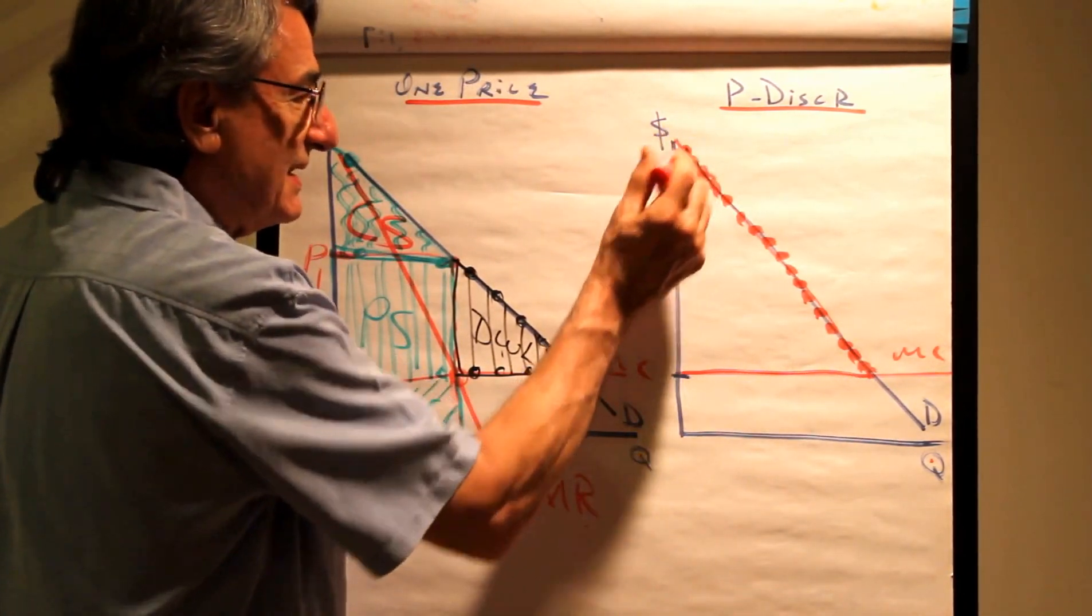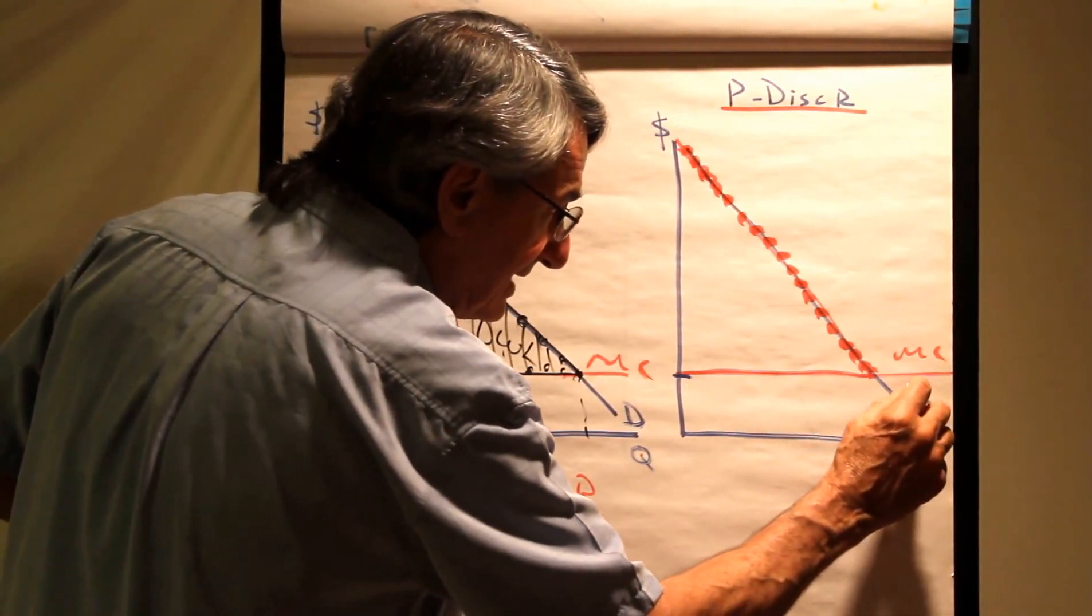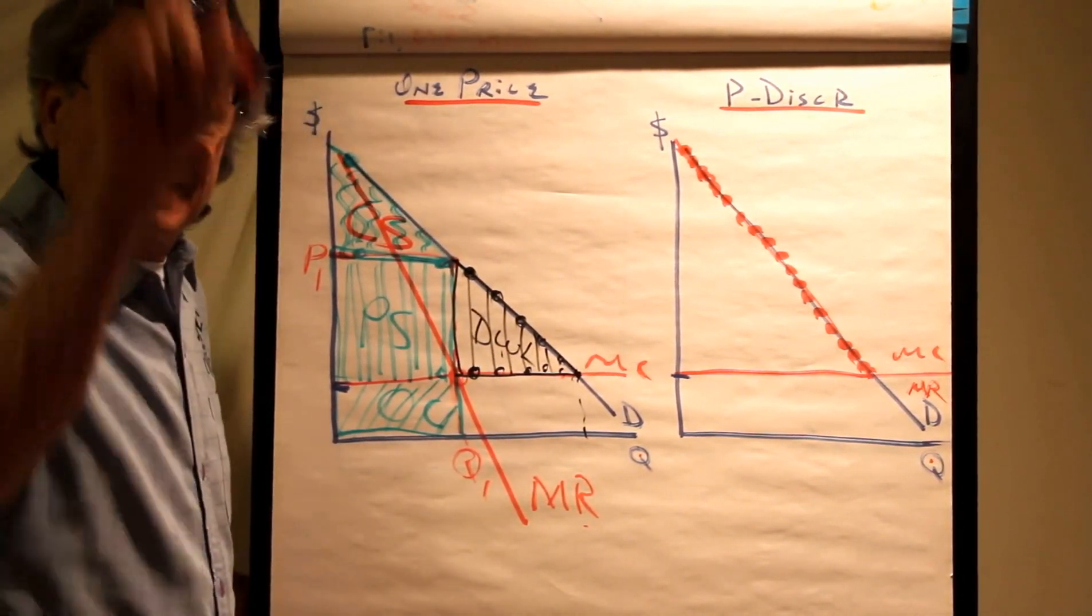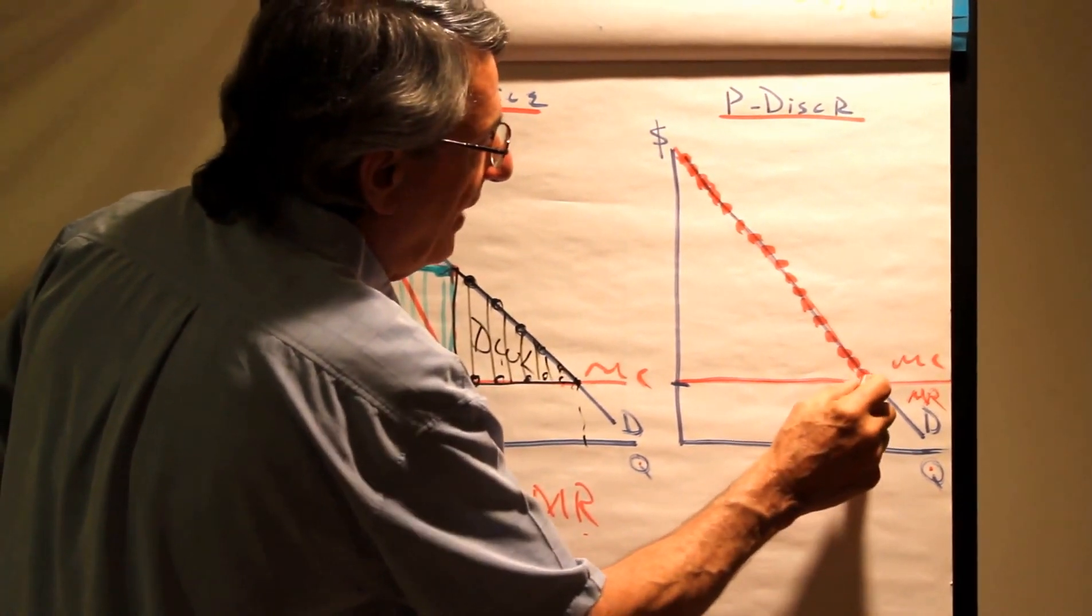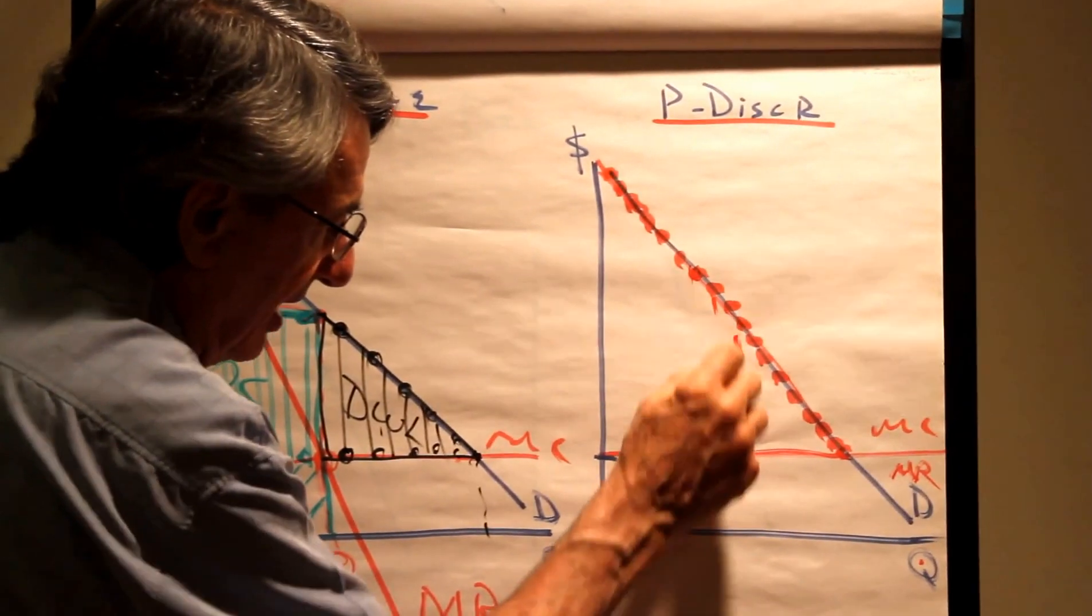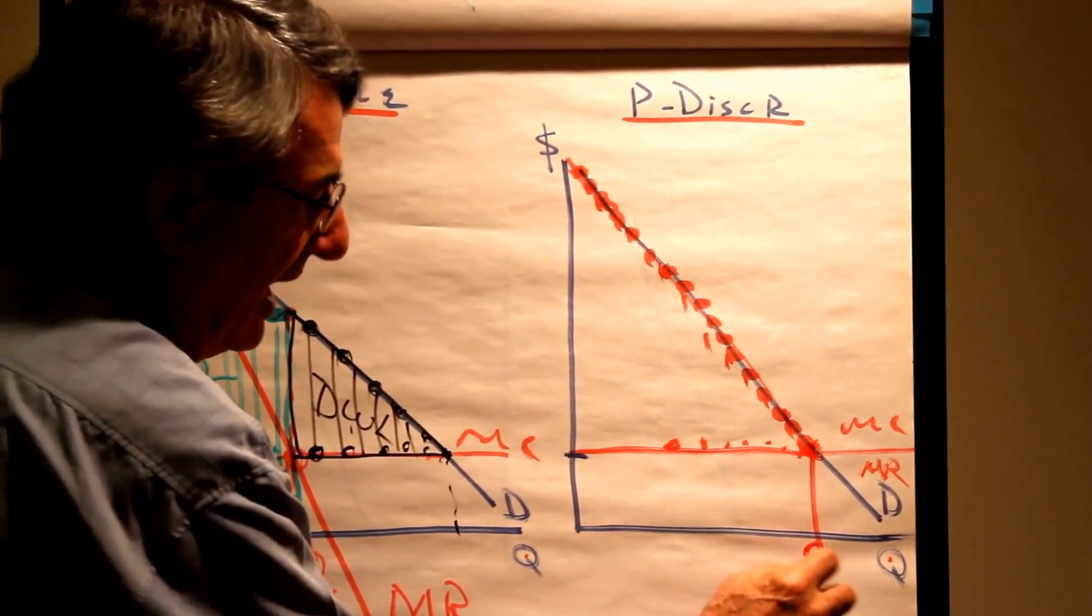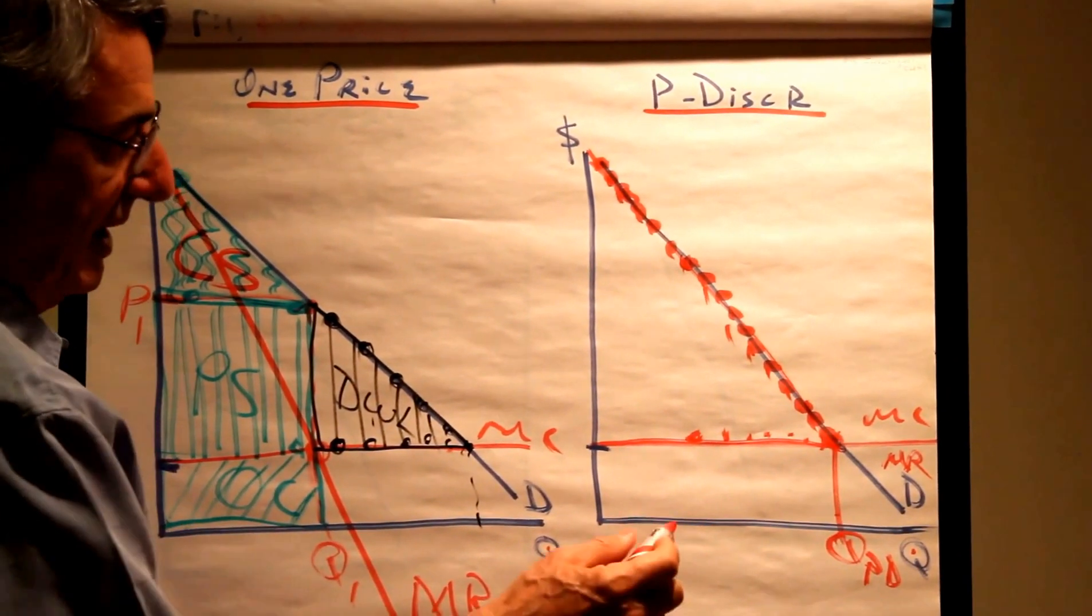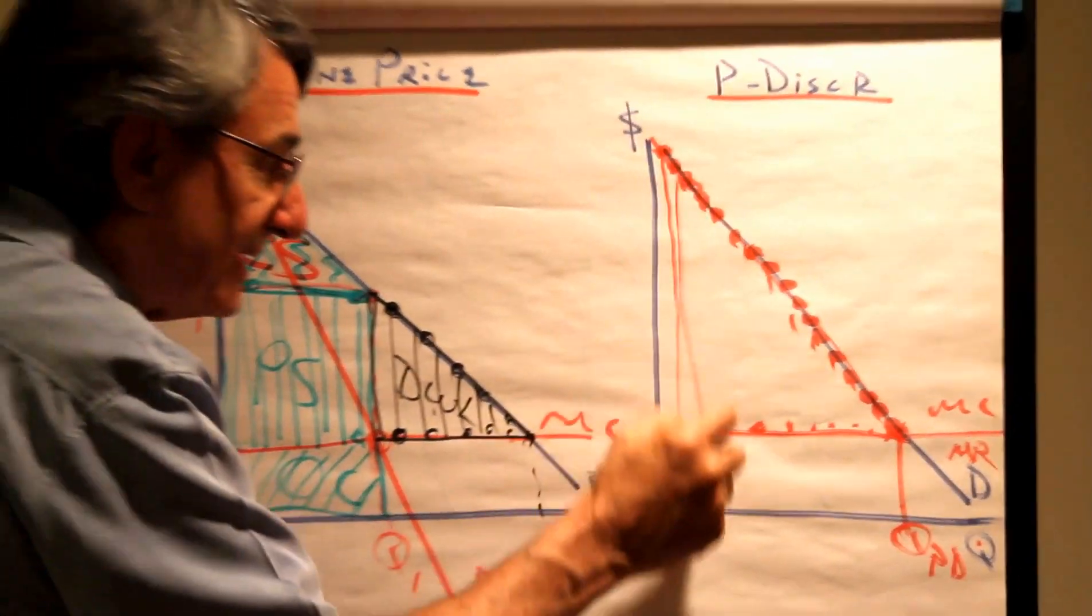So if that's the case, then demand is the same as marginal revenue. With perfect price discrimination, demand is the same as marginal revenue. And so they would produce as long as the marginal revenue exceeds the marginal cost. All of these get produced until there. And this will be the price discriminator's quantity and the price. There's not one price. There are all these different prices.